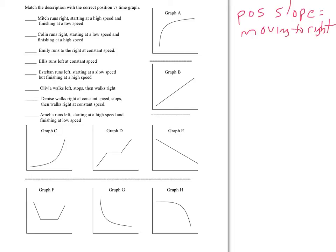A negative slope will be the opposite. That will be an object moving to the left, or down, or whatever you consider the negative direction. Finally, the magnitude of the slope represents the speed of the object.